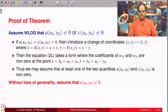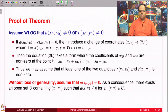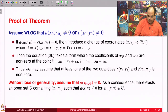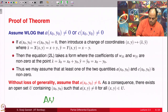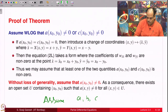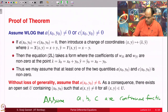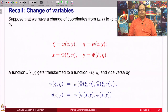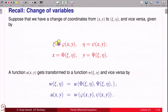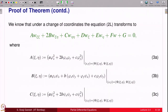Let us assume A(x₀, y₀) ≠ 0, and we assume A is continuous so that there will be an open set in which A is non-zero, containing that point. Assume A, B, C are continuous functions. Recall the change of variables: ξ = φ(x, y), η = ψ(x, y); the function u becomes w in the new coordinate system. The second order linear equation transforms accordingly, and we have listed ā, b̄, c̄ in the last lecture.